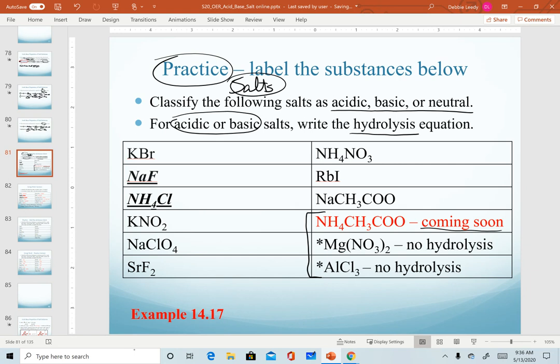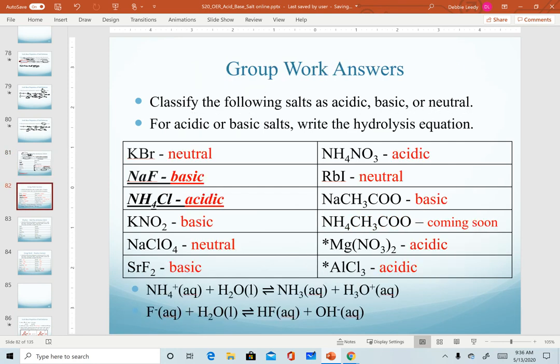For magnesium nitrate and aluminum chloride, you can predict whether these are acidic, basic, or neutral, but their hydrolysis equations are too difficult, so don't write equations for those. In the slides, I did leave the answers so you can check yourself.